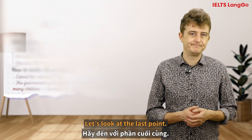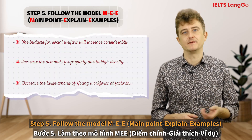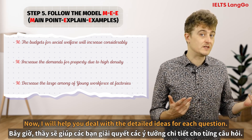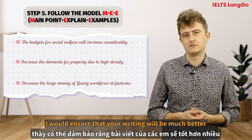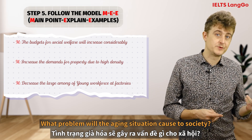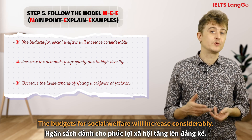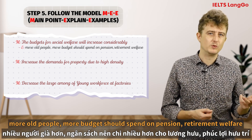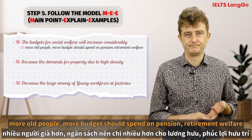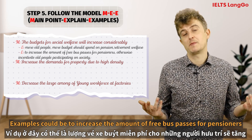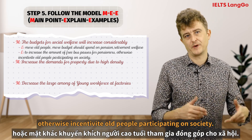Step five: follow the MEE model — Main point, Explain, and Examples. I'll help you develop detailed ideas for each question. What problems will the ageing population cause for society? Main point: social welfare budgets will increase considerably. Explanation: more old people means more spending on pensions, retirement, and welfare. Examples could include increasing the amount of free bus passes for pensioners, or otherwise incentivising older people to participate in society.